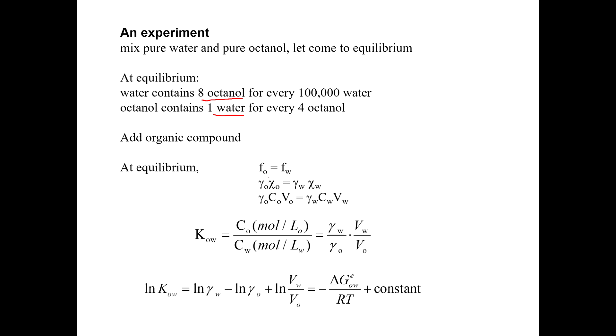So at equilibrium, we know that the fugacity in both phases is equal. We can write the fugacity as the activity coefficient times the mole fraction concentration on either side and the octanol in the water. We can write the mole fraction concentration as molar concentration times molar volume. And then we can back out KOW here as just CO over CW. And again, note that it has the ratio of the activity coefficients built into it here. So again, this is all about how ideal the behavior of the chemical is in these two different phases.